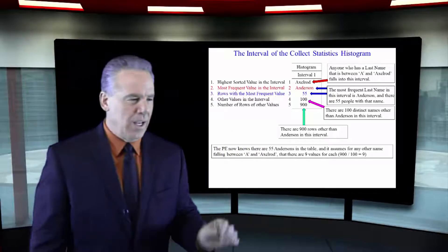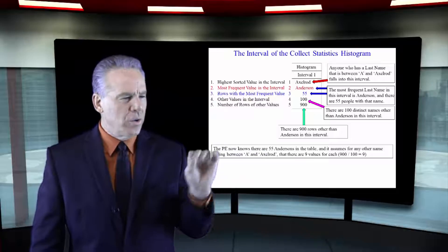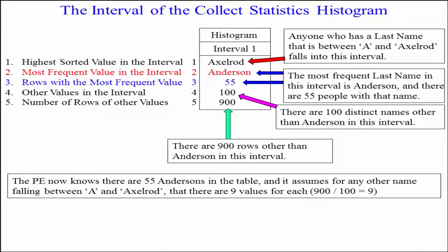The highest sorted value in the interval is Axelrod. Let's say the first name in that interval started with just AB. It went from AB all the way up to Axelrod, and that's like a phone book that says everything between those two names is in this interval.